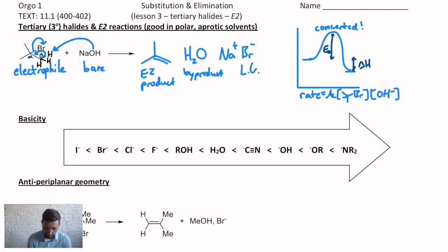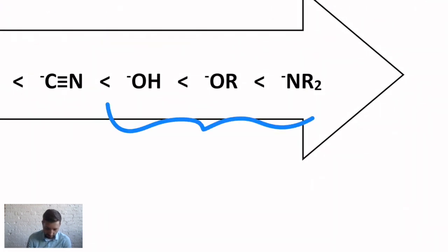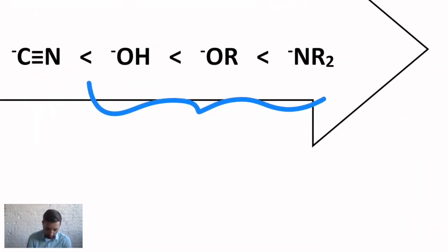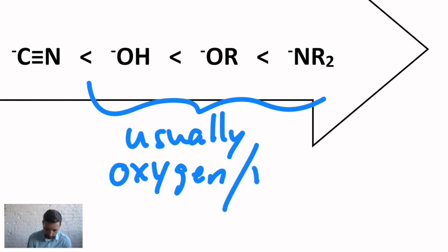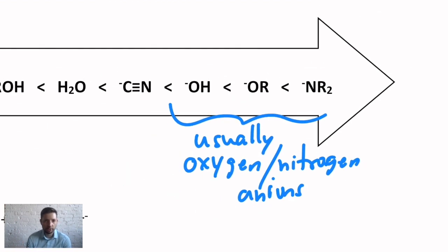Speaking of bases, here's a nice chart with bases from weak to strong. And I just really want to focus on what's on the right-hand side. We are primarily going to be looking for things that are usually oxygen or nitrogen anions. That's not always the case, but that's what makes a good base. Small, electron-rich, negatively charged, that combination with a tertiary halide almost certainly is going to give you an E2 elimination.